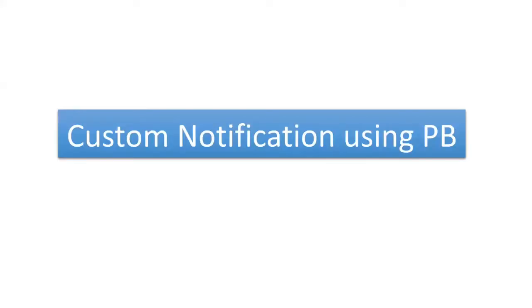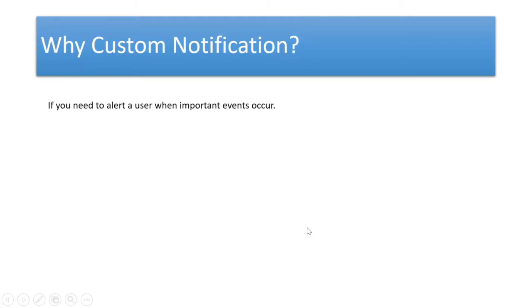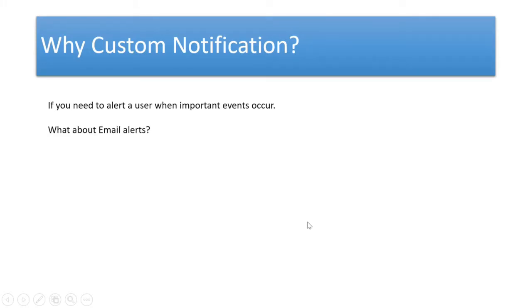Welcome back to this video series. Today's topic is custom notifications using Process Builder. Before we jump into understanding what exactly a custom notification is, let's understand why we use it first. Let's say you wanted to alert a user on an important event that has occurred on Salesforce. If you are aware of email alerts, you might say you'd write an email alert to let the user know. We do this because we want the user's attention on the event so they can act upon it and take the process forward — this is very important for the business.